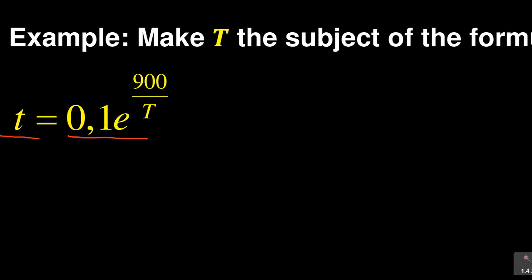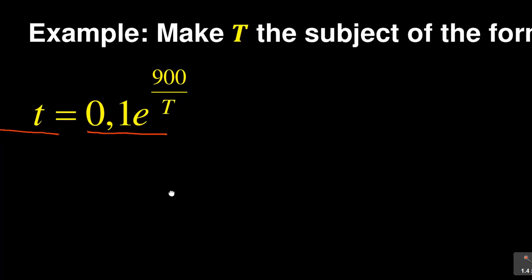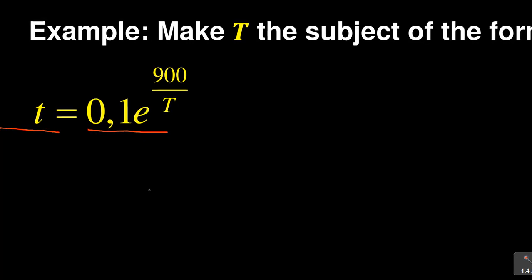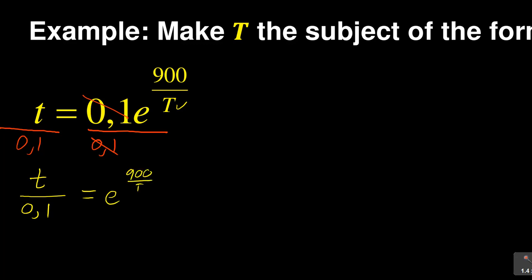What you do on the left, you also do on the right. So if I divide by 0.1 on both sides, you can see that the right-hand side is taken care of. Remember, we're interested in the big T. So what I'll be having is T over 0.1 is equal to e to the exponent 900 over T. That was the main part.